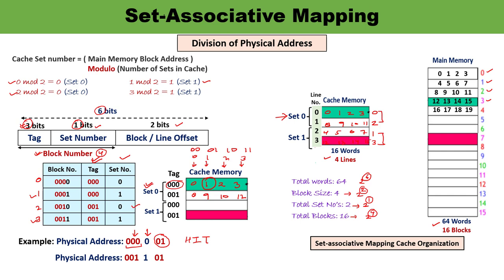One more example: if the physical address maps to set 1 and the tag is 001, we search within set 1. The tag 001 is already available in that set, so this is also a cache hit. Within that cache line, the corresponding word is copied to the CPU.